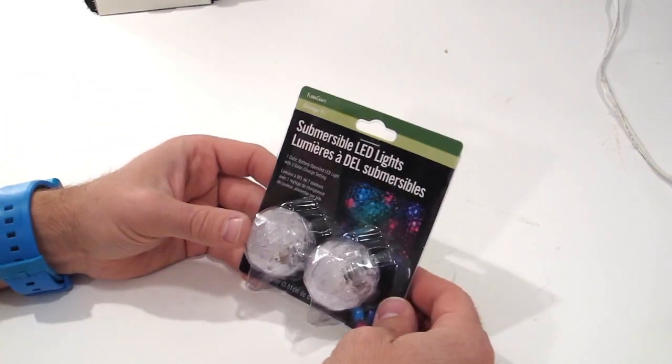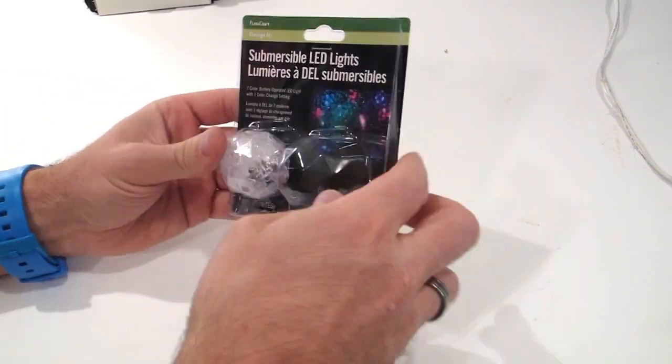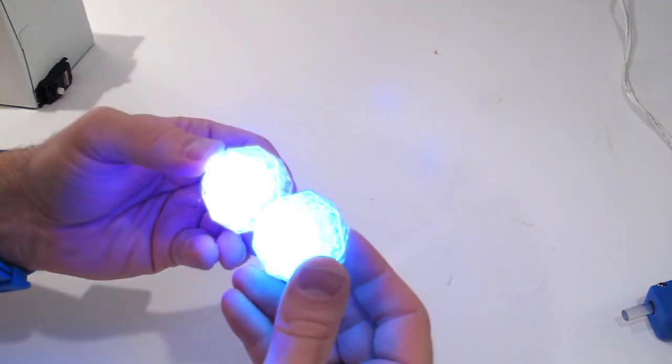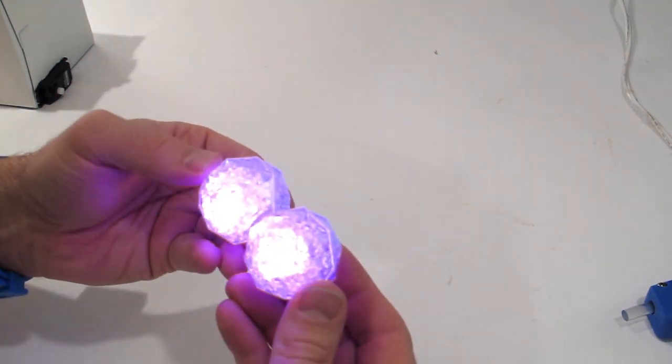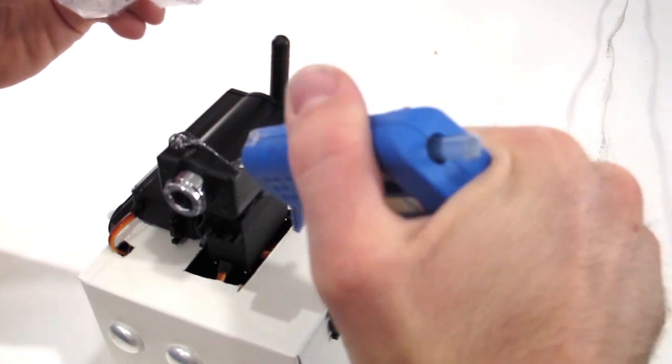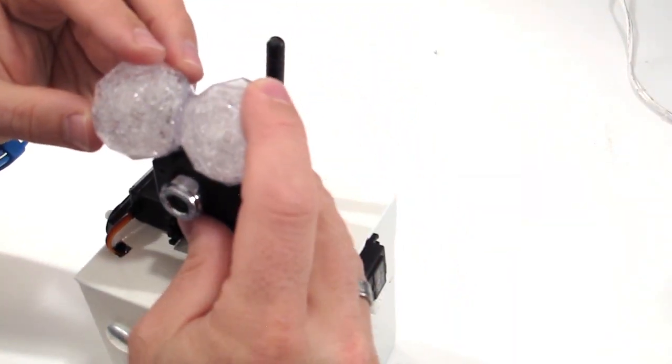For the eyes of my EasyBoxBot, I found these LED light bulbs from Walmart. Be creative with the eyes of your robot. You can even use ping pong balls. Attach the eyes to the top of the camera assembly with your hot glue gun.